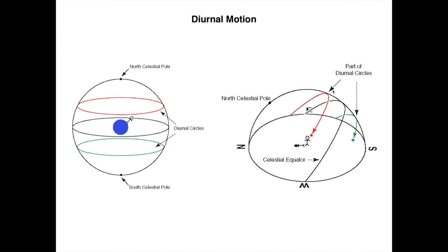We can define other points along the diurnal circle. Specifically, culmination is when the star crosses the meridian. The star rises in the east, culminates when it crosses the meridian, and then descends until it sets in the west. All stars do this — not only the sun. They rise, they culminate, and they set. So culmination is the meridional passage of a star in its diurnal motion.